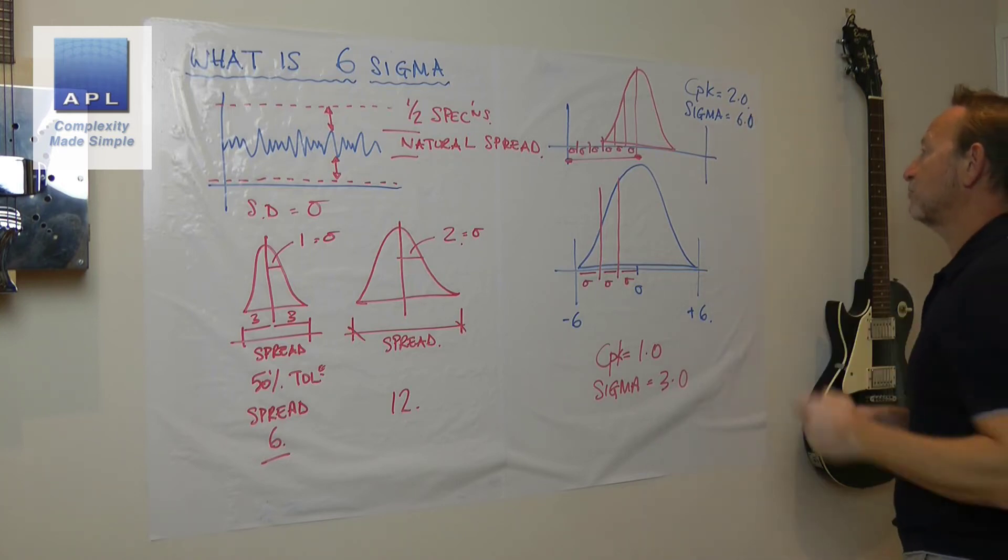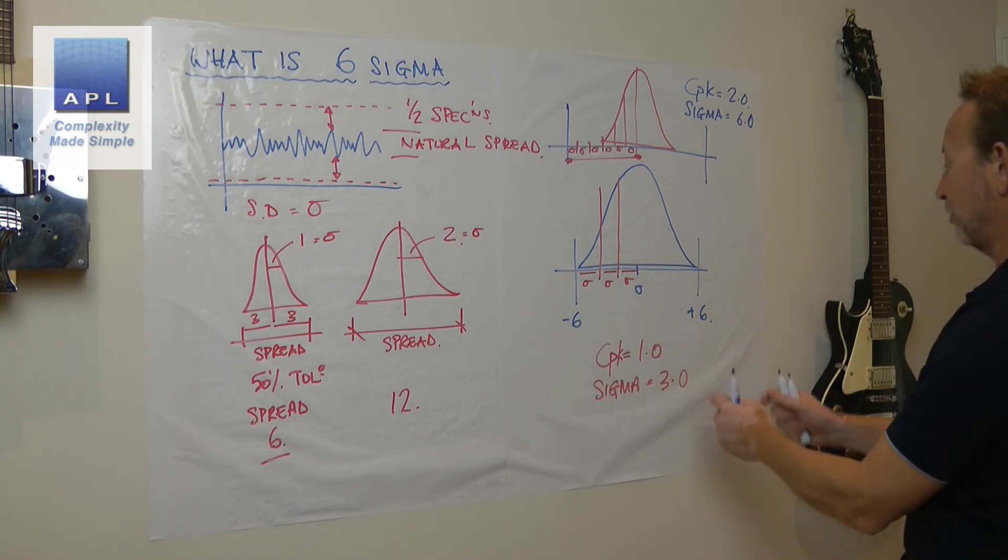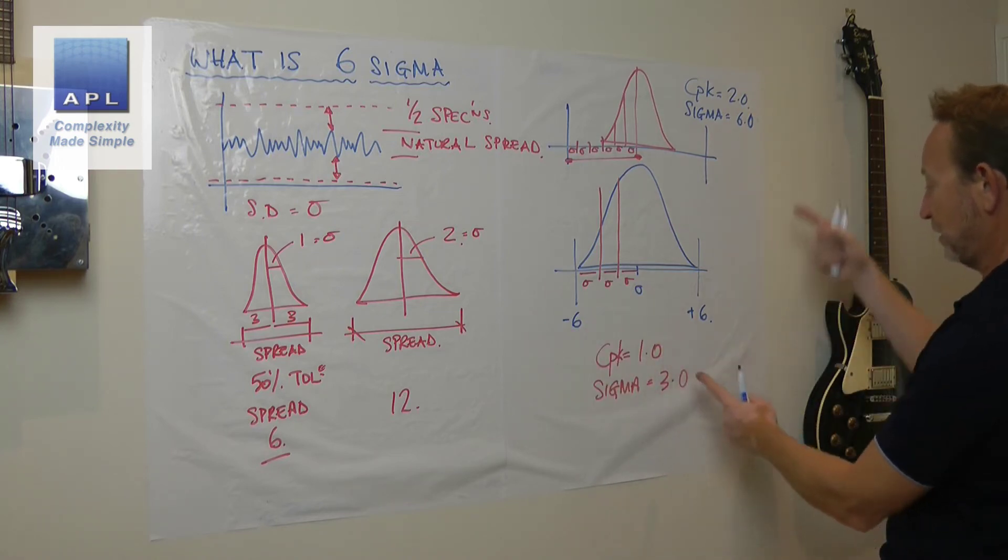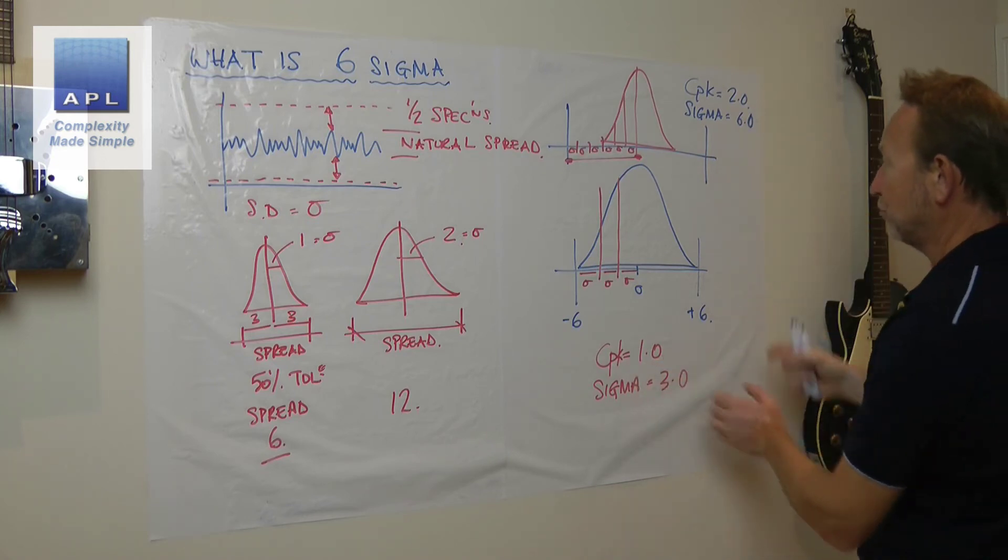So you can see that by halving the standard deviation, you double the CPK, you double the Sigma level. So it's up to you—you can use CPK or you can use Sigma.